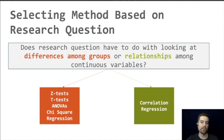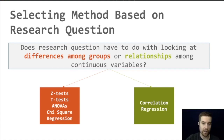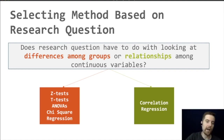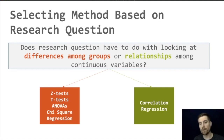You can have a research question that has to do with looking at differences among groups — if you think one group is going to be different than another. The other type is relationships among continuous variables, just like correlation. When your research question is about differences among groups, we're going to be looking at z-tests, t-tests, ANOVAs, chi-square, and regression. When it's about relationships, it's going to be correlation or regression.